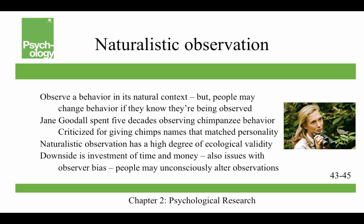When you observe a behavior in its natural context, that's naturalistic observation. A problem is that people might change their behavior if they know they're being observed. Jane Goodall spent five decades observing chimpanzee behavior, but she was criticized for giving the chimps names that matched their personality — one named Frodo eventually became an alpha male and became aggressive with her. Her favorite chimp was named David Graybeard, who was friends with another chimp named Goliath. Today chimps would be identified by numbers and letters. Naturalistic observation has a high degree of ecological validity, but the downside is a huge investment of time and money, and issues with observer bias — where people may unconsciously alter their observations to fulfill their hypotheses.